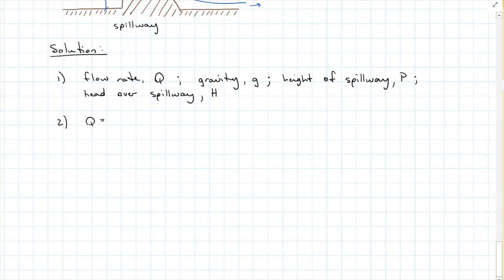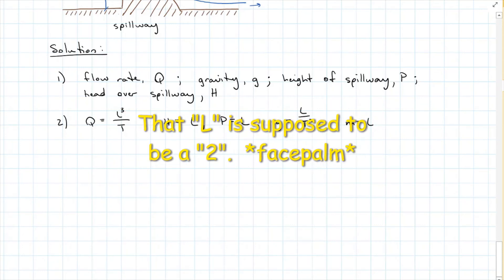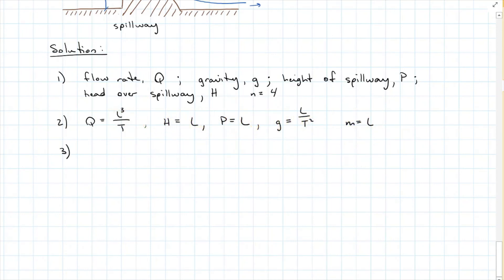Step two: dimensions. Flow rate is length³ over time. The head over the spillway is just a length, as is the height of the spillway. Gravity is length over time squared. So our entire system is made up of two dimensions — length and time — meaning our reduction factor is four variables minus two dimensions, giving us two pi groups.